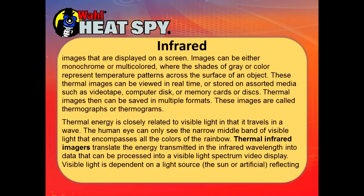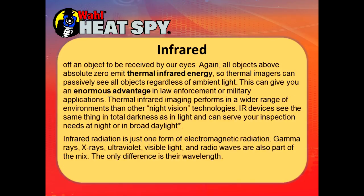Thermal imagery is closely related to visible light in that it travels in a wave. The human eye can only see the narrow middle band of visible light that encompasses all the colors of the rainbow. Thermal infrared imagers translate the energy transmitted in the infrared wavelength into data that can be processed into a visible light spectrum video display. Visible light is dependent on a light source — the sun or some artificial light — reflecting off of an object to be received by our eyes. All objects above absolute zero emit thermal infrared energy, so infrared imagers can passively see all objects regardless of ambient light, giving an enormous advantage in law enforcement and military applications where you can see the same thing in pitch black darkness as in bright daylight.